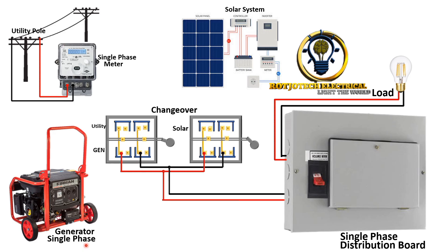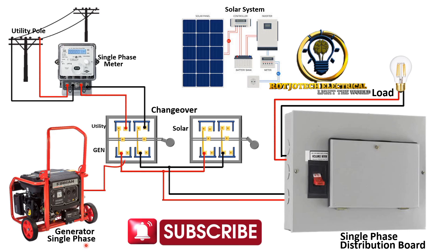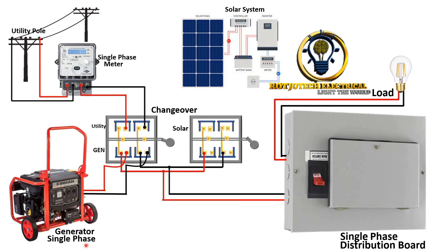Now that the load side is done, let's connect the power sources. We connect the live and neutral of the utility to the first input of the first changeover switch. Then we connect the generator to the second input of that same changeover switch. The output of this changeover switch is the load, which we have already done. Then we come to the second changeover switch and connect our solar system — live and neutral — to it. Very simple and straightforward.